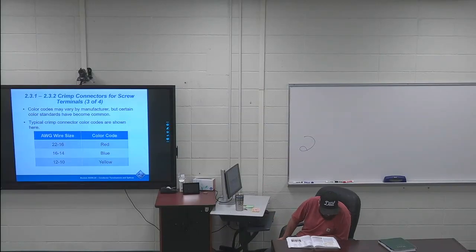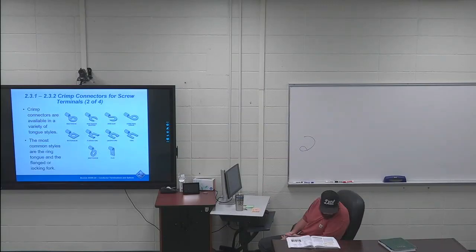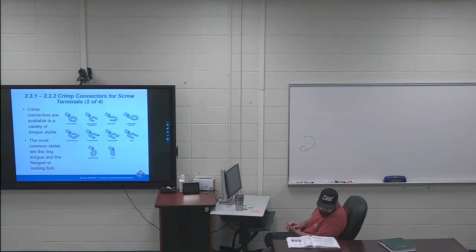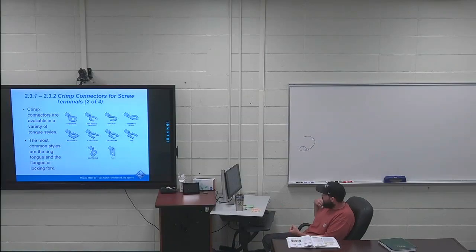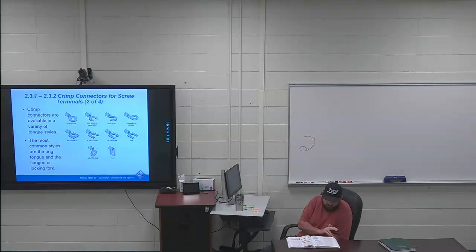Next paragraph, right in the middle of that paragraph, I've got three sentences highlighted: tongue styles vary depending on termination requirements. Figure 30, which is what's on the board, shows standard tongue styles. The styles most frequently used are the ring tongue and the flange or locking fork. That just depends on what you're using. I've used the ring tongue, not a huge fan because you have to take the screw all the way out to get them in and out. I usually like the fork style the best. Locking fork, I haven't really used a ton, but it's just going to be whatever environment, whatever is available to you. You have a bunch of different options for that.